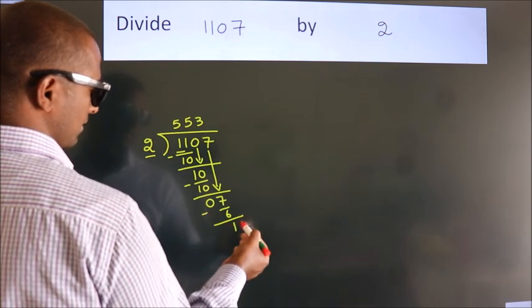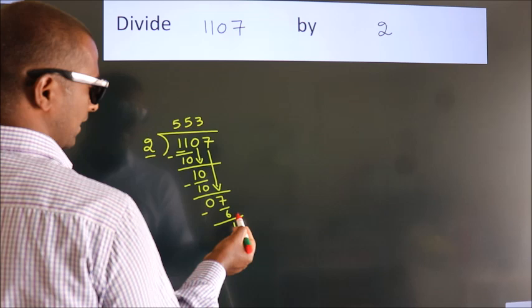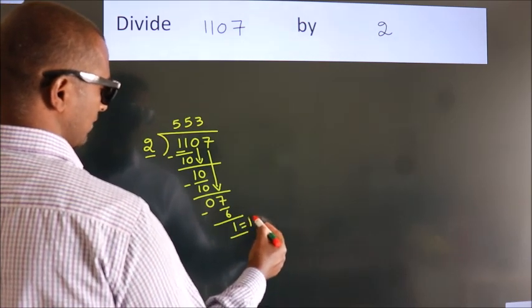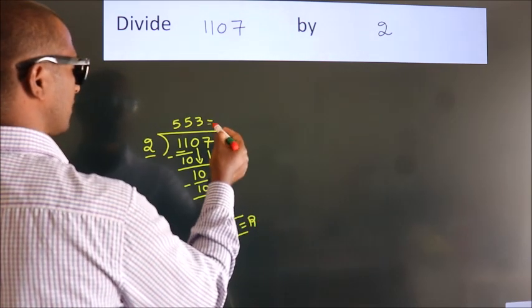After this, no more numbers to bring it down. So we stop here. This is our remainder. This is our quotient.